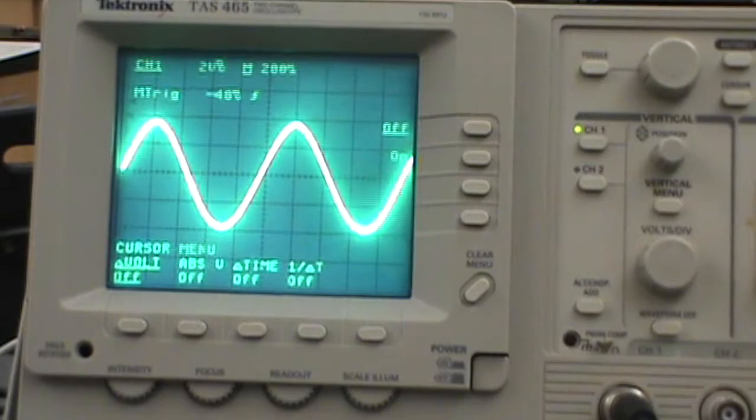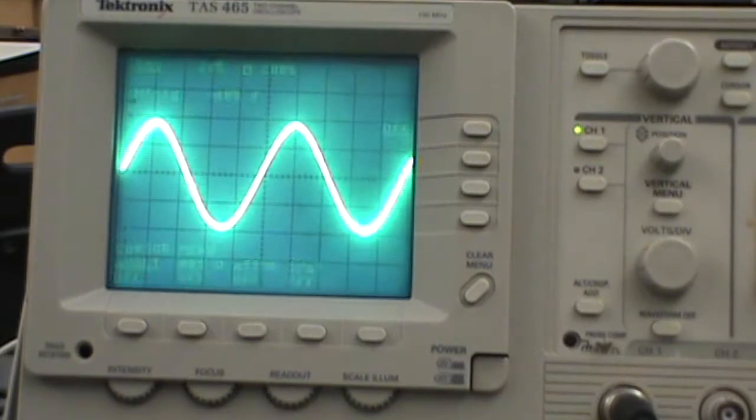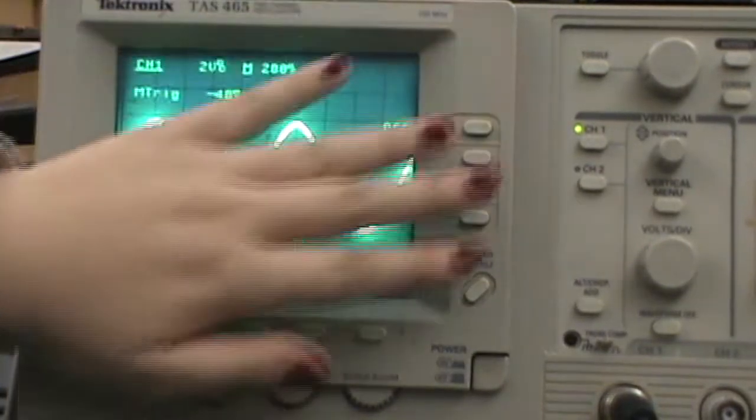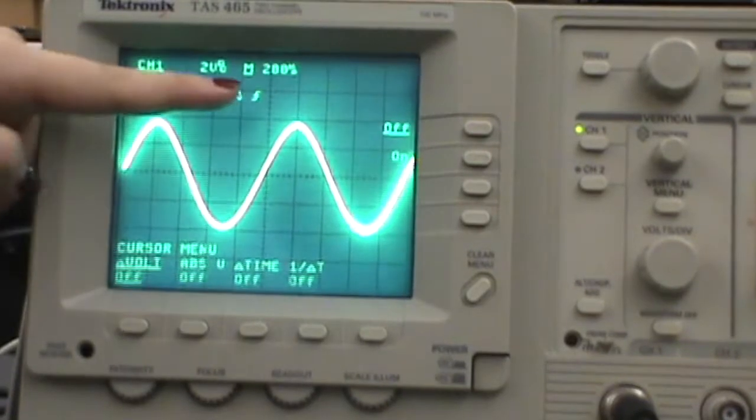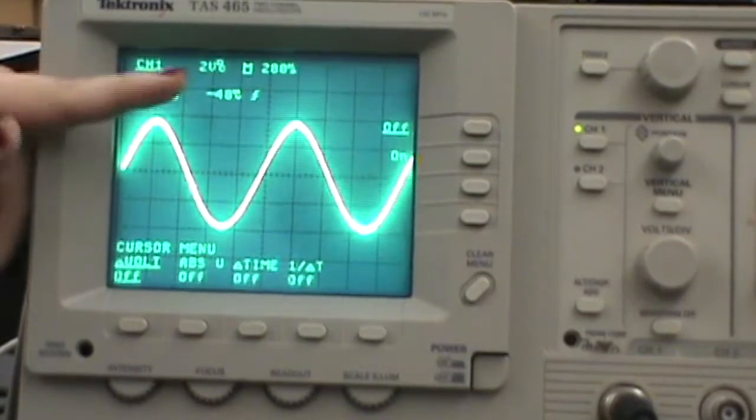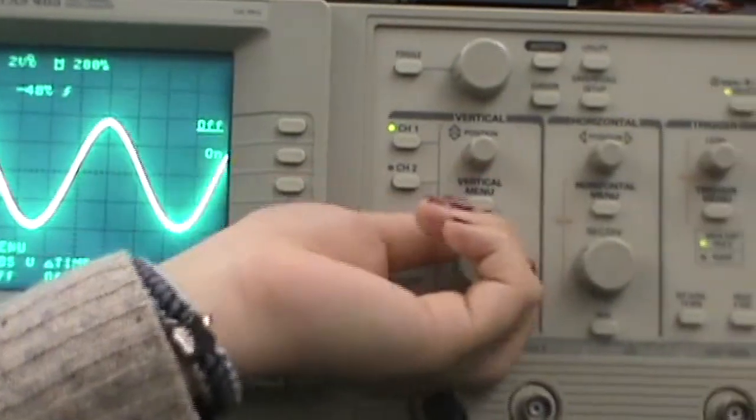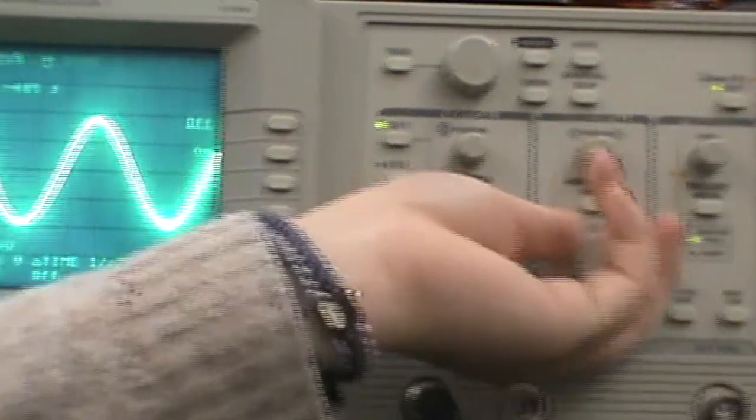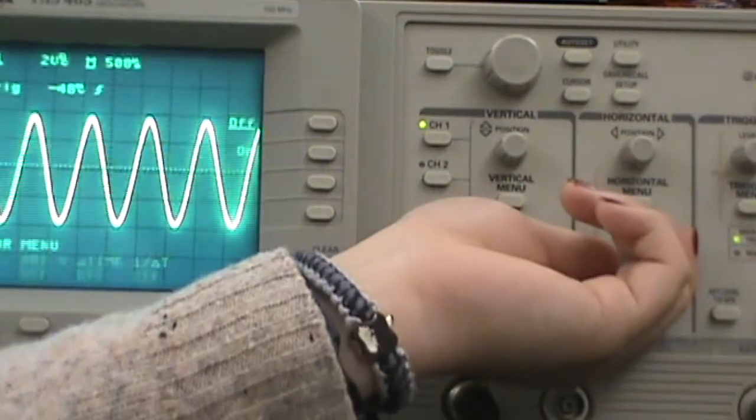So how do we make measurements with an oscilloscope? As we can see, there is a grid over the screen, and these numbers show the scale of the grid. We can adjust the scale of the grid using the knob under vertical or horizontal settings to make the waveform fit better to the screen.